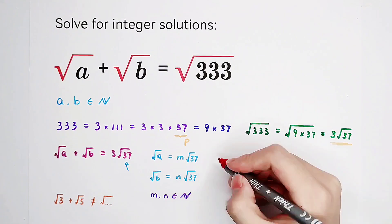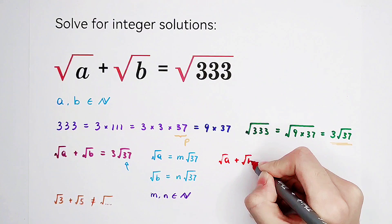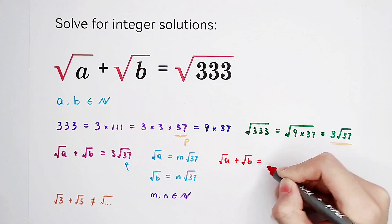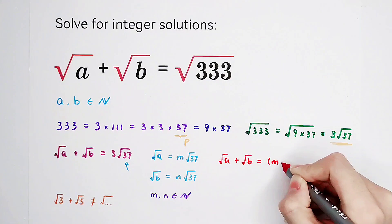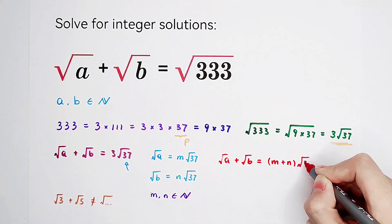Now, if we add these two together, square root of a plus square root of b equals m plus n times square root of 37. Because square root of 37 can be taken out.